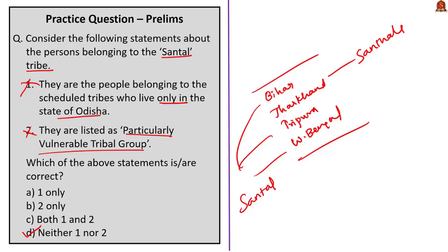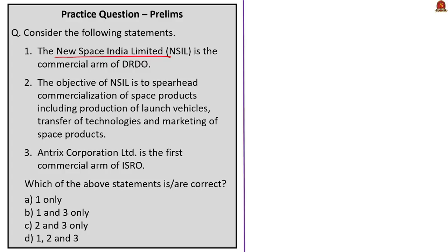This question is with respect to New Space India Limited (NSIL). Three statements are given. The first statement: NSIL is the commercial arm of DRDO (Defence Research and Development Organisation). This is incorrect — NSIL is a commercial arm of ISRO under the Department of Space. It was set up as a fully owned Central Public Sector Enterprise on 6th March 2019, to commercially exploit ISRO's R&D work.